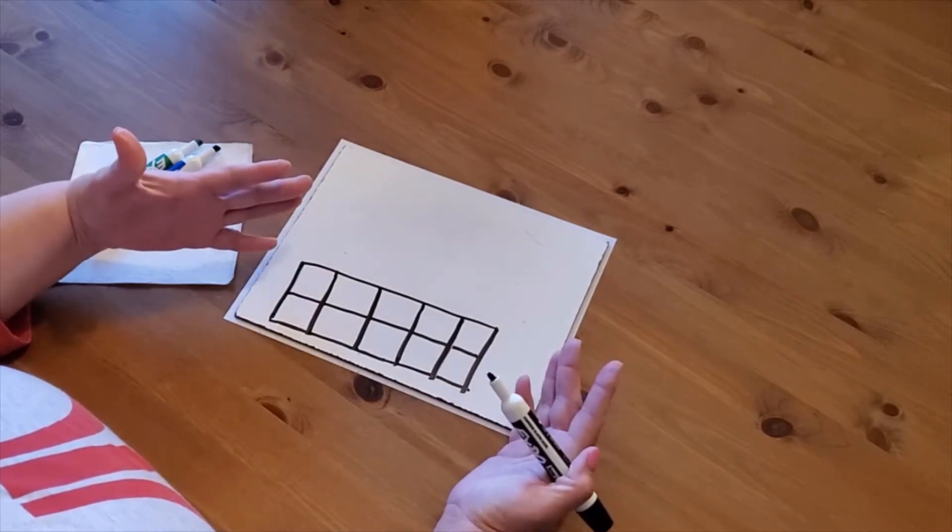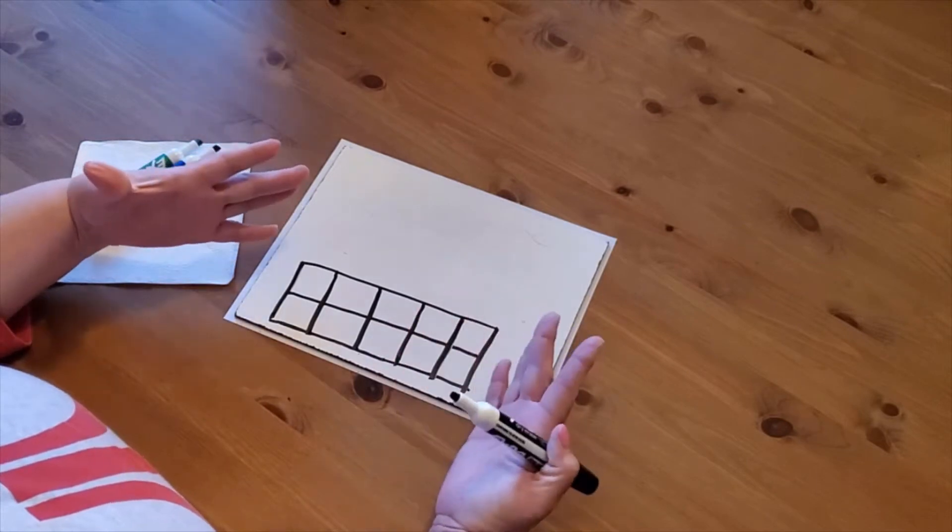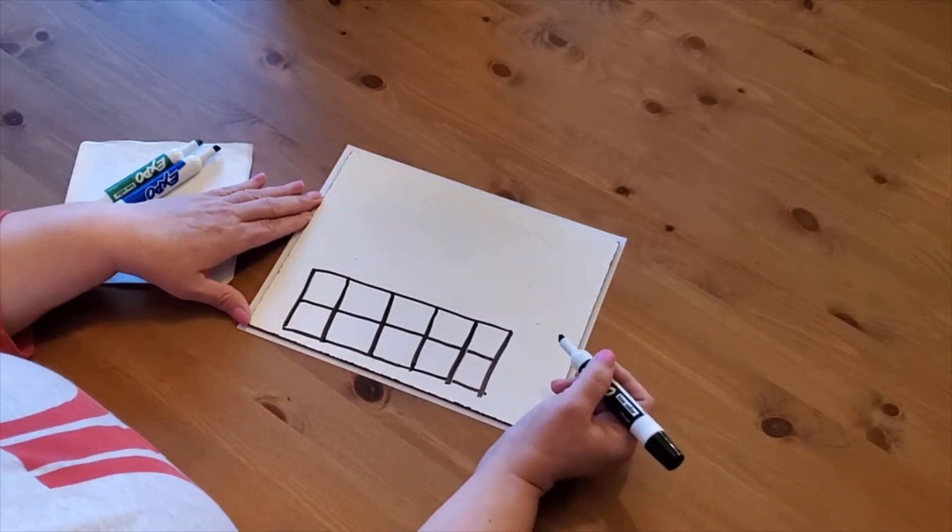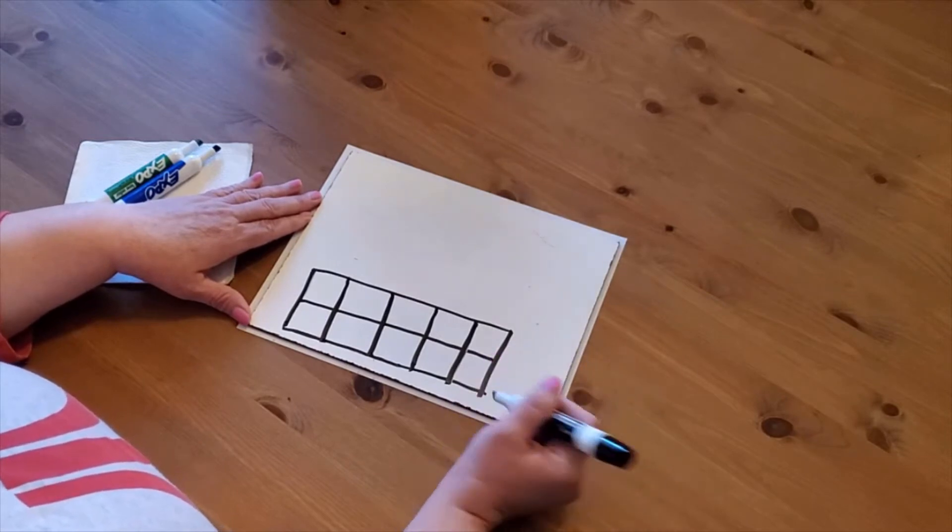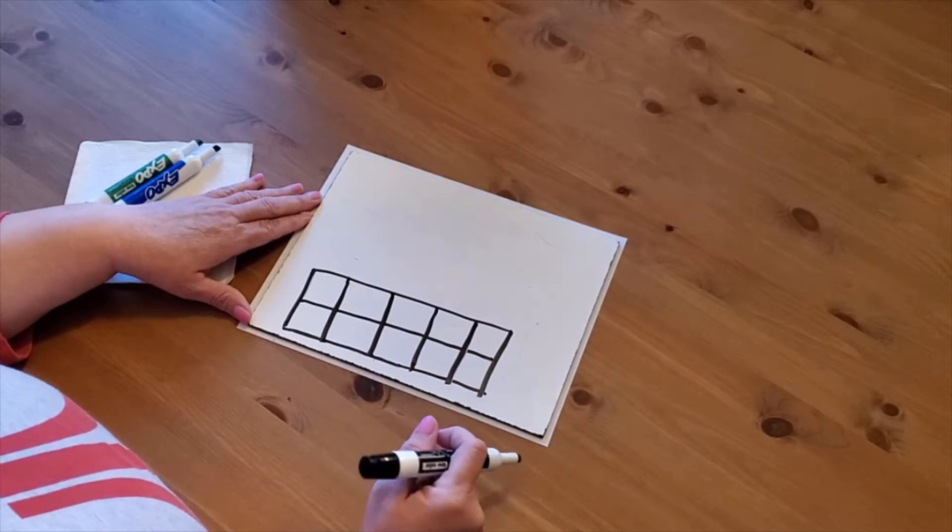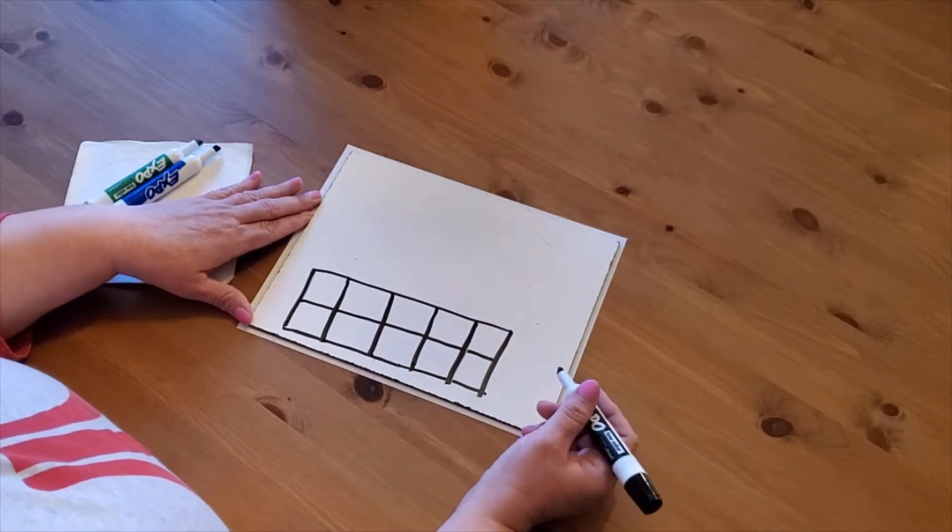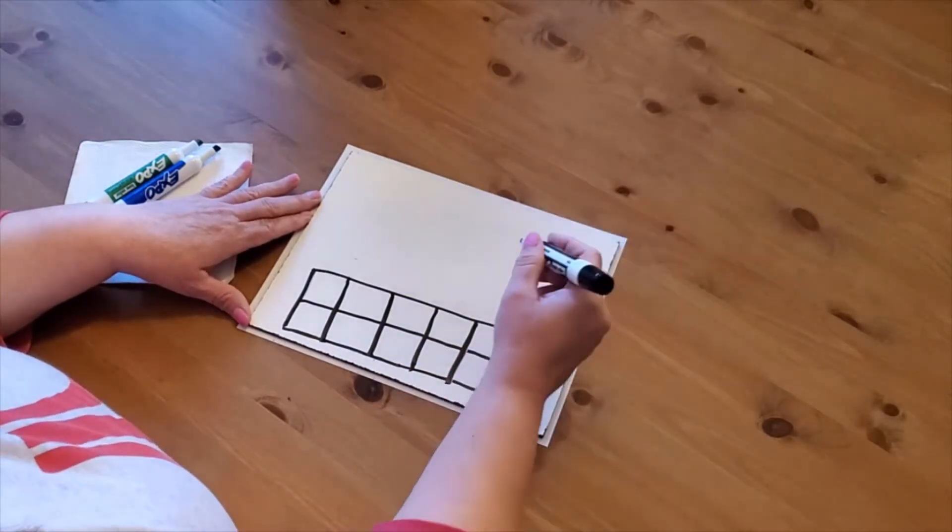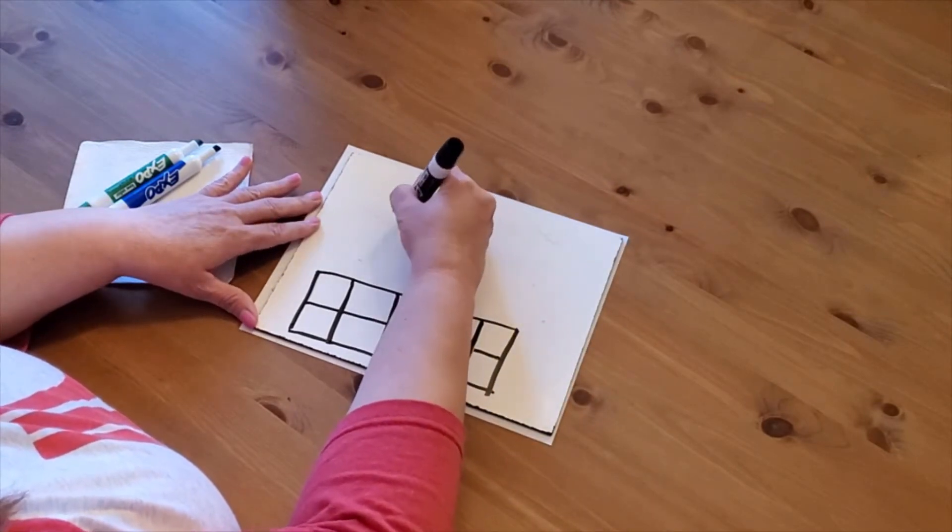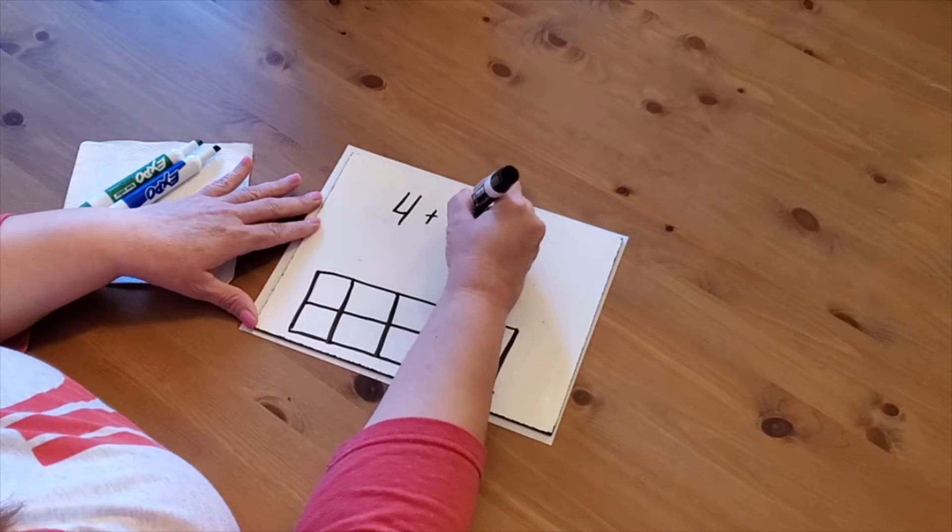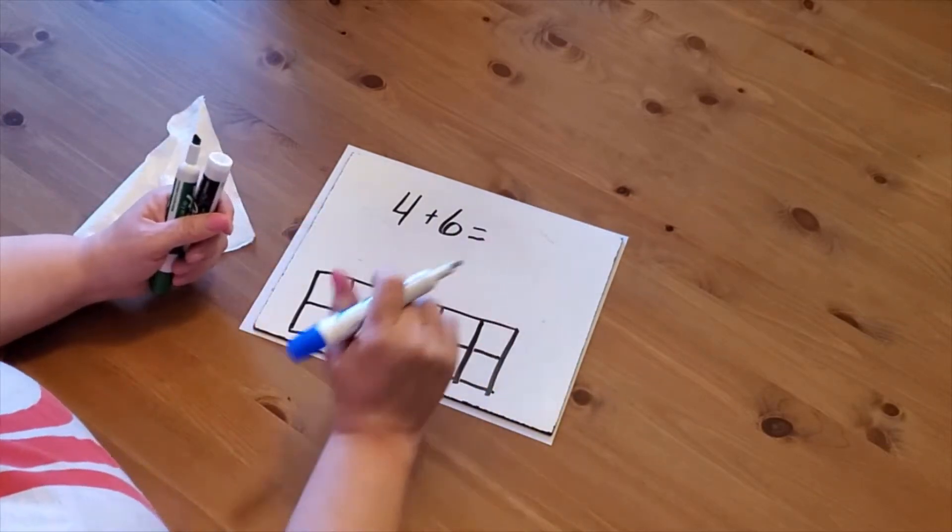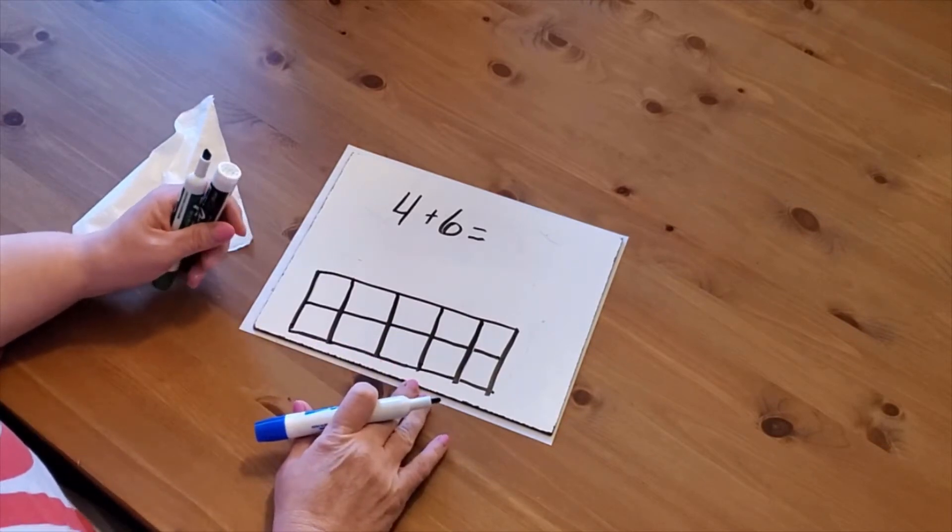I just want to take this mini lesson as a refresher for you. Your assignment is going to be in Seesaw. It's going to give you an addition problem and you're going to have a 10 frame. For example, you might see something like 4 plus 6 equals, and then you're going to use your 10 frame.